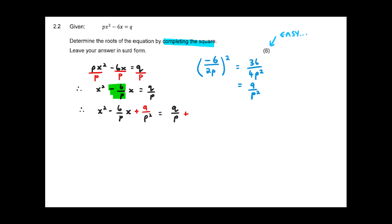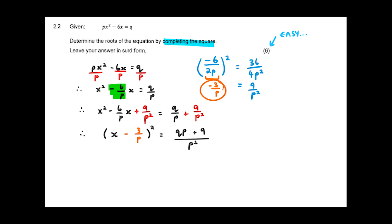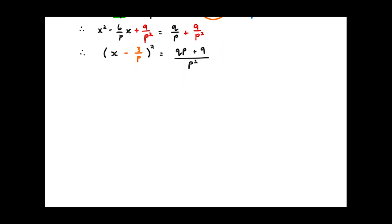Adding 9 over p squared to both sides gives me x squared minus 6 over p times x plus 9 over p squared on the left, equal to q over p plus 9 over p squared on the right. I then factorize the left-hand side — the trick is to take what's inside the bracket, which is minus 3 over p, and write it as (x minus 3 over p) squared. For the right-hand side I find a common denominator of p squared, giving qp plus 9 all over p squared.